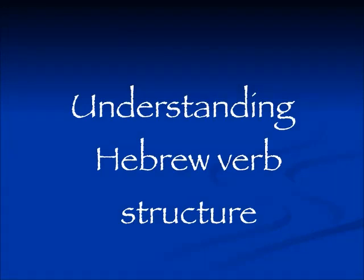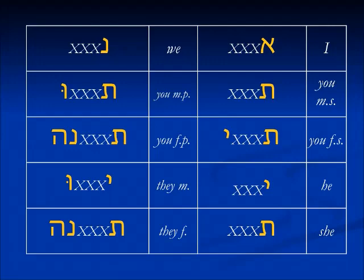Shalom. Today we are continuing in the series of understanding Hebrew verb structure. Today we will begin the imperfect or future tense. This tense is indicated mostly by prefixes and a few suffixes. In every Binyan you will see the same prefixes and suffixes for the same people in the future tense, in the imperfect tense.